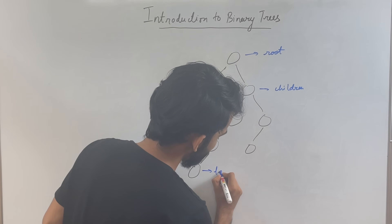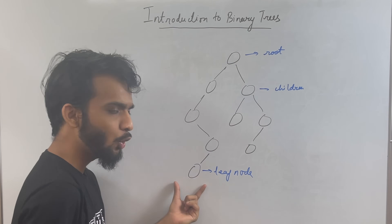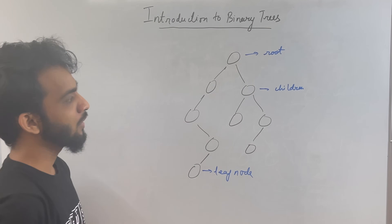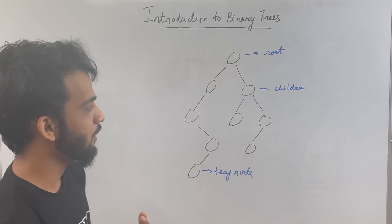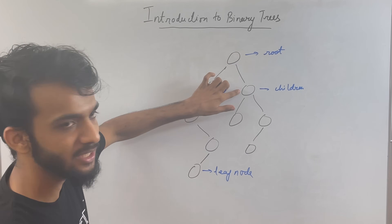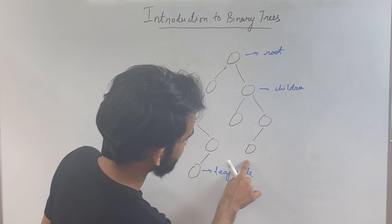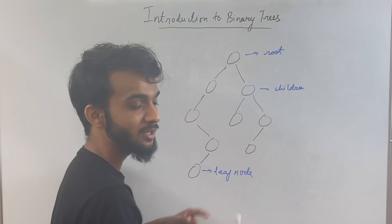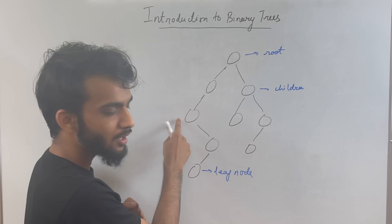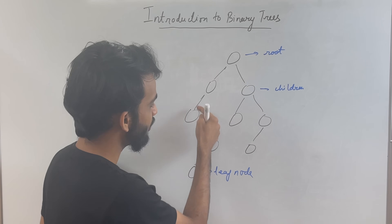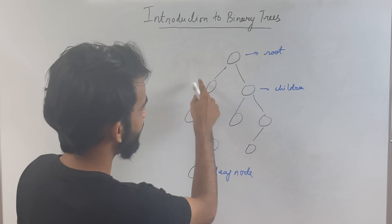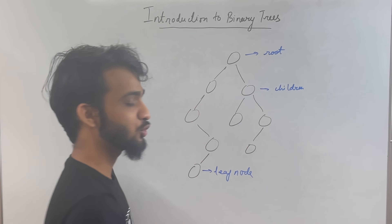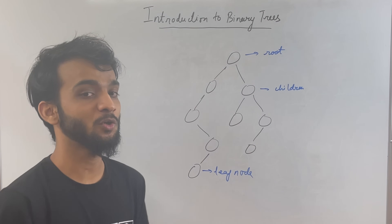There's one more concept — the leaf node. A node which does not have any children is known as a leaf node. There's another concept: subtree. Let's assume you're standing at a node — this entire portion below it will be the subtree. For example, standing here, this entire portion is the subtree. Standing here, this entire portion is the subtree.